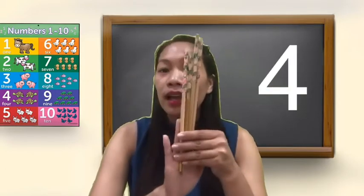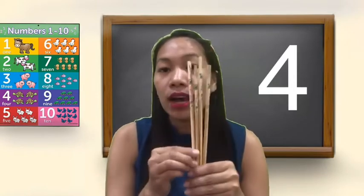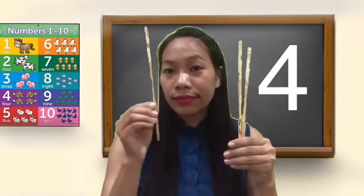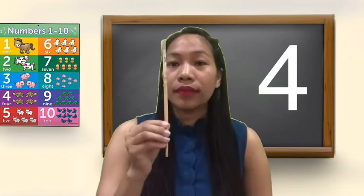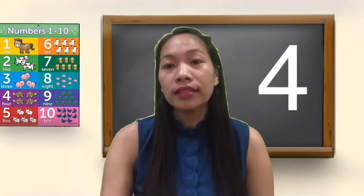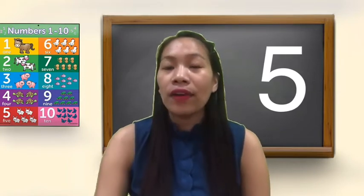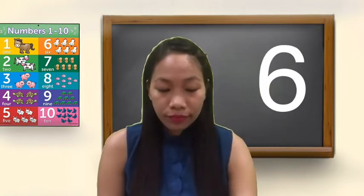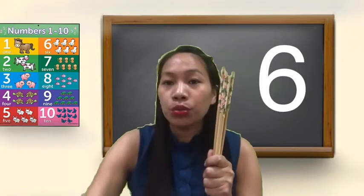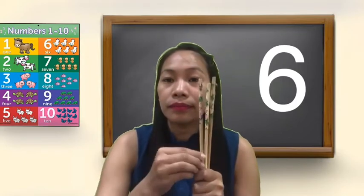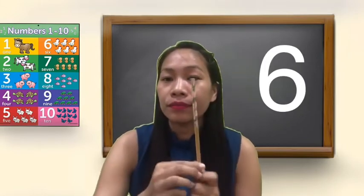4 — 4 means 4 objects. Let us count: 1, 2, 3, 4. 5 — 1, 2, 3, 4, and 5. 5 means 5 objects.